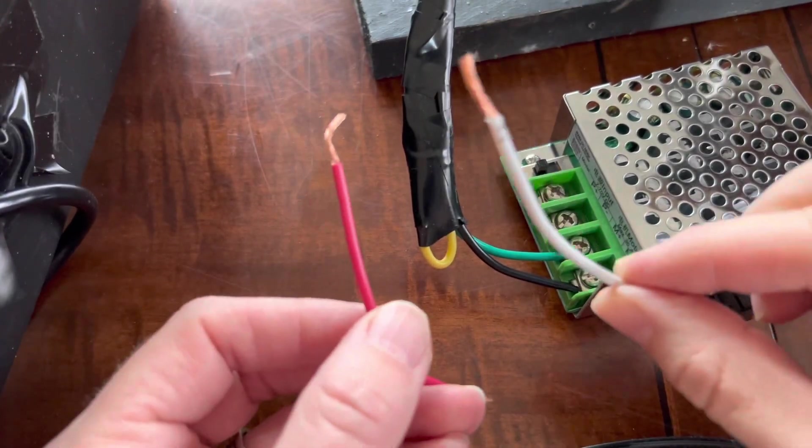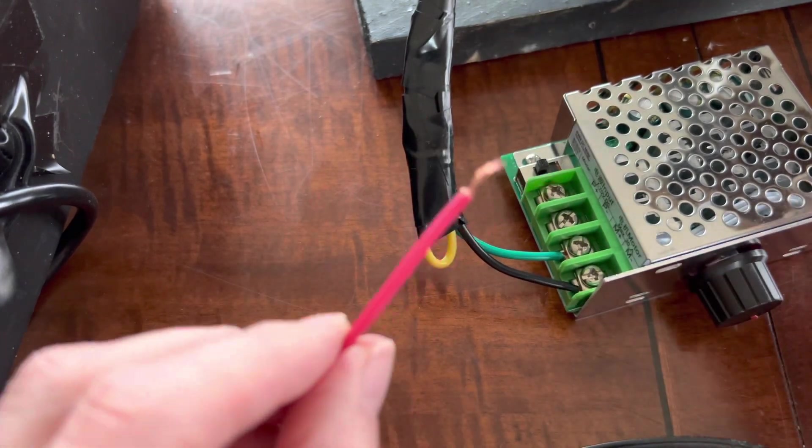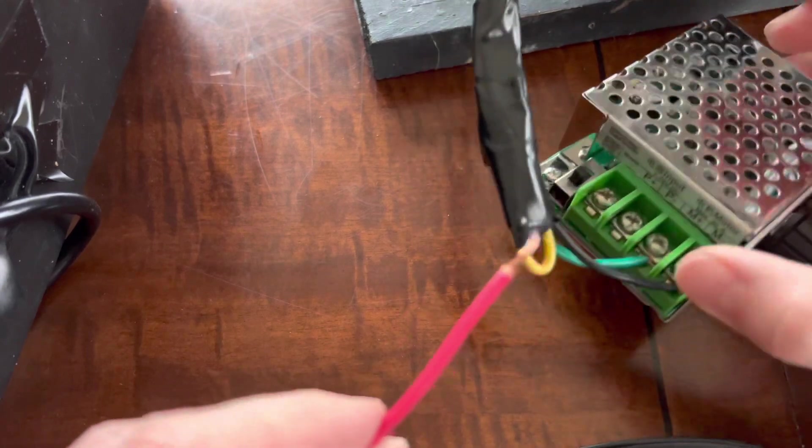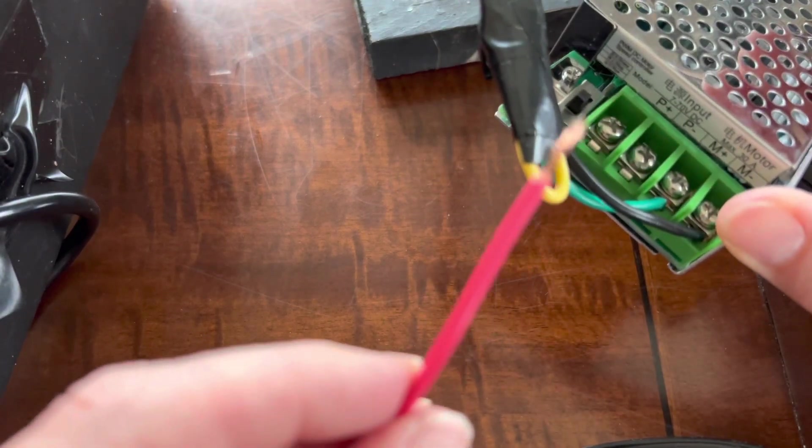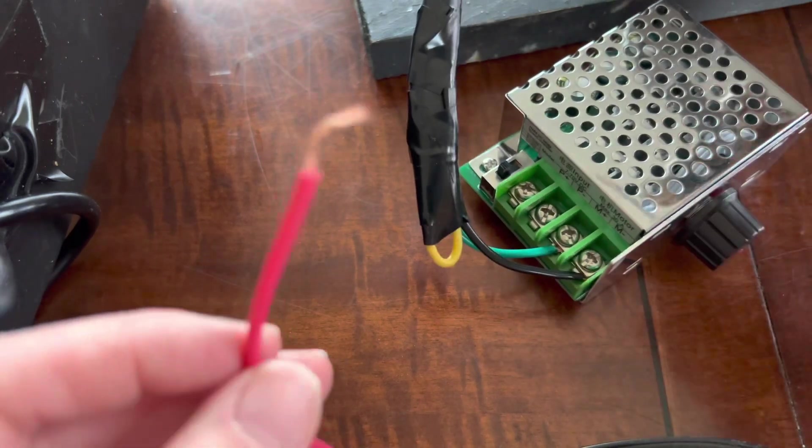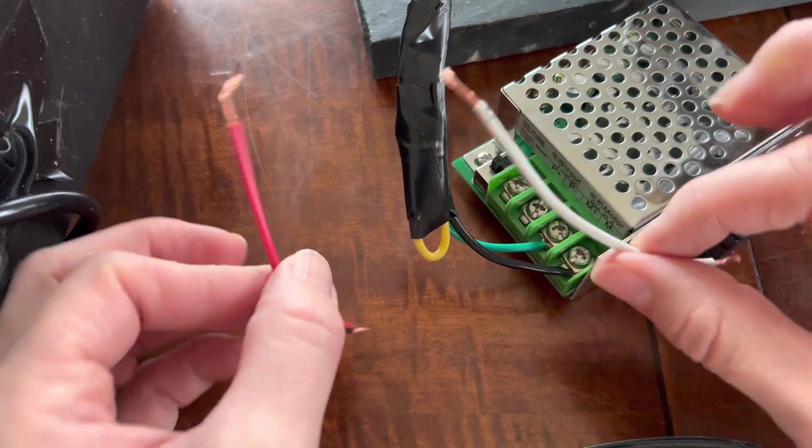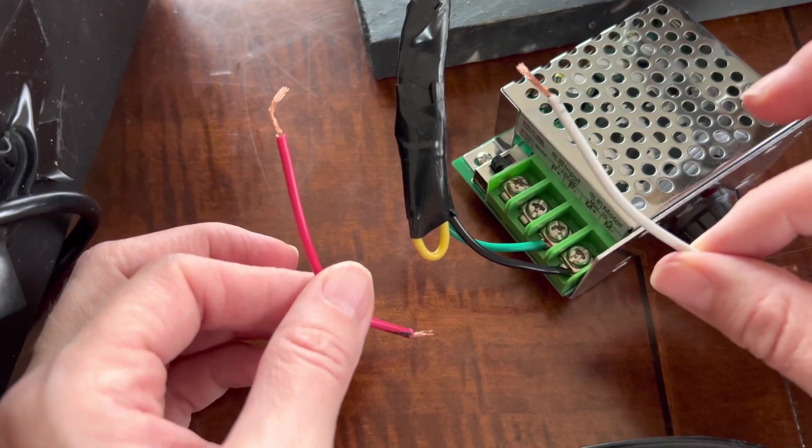Now we're going to take our two little pieces that we cut off of the excess wiper motor wiring and we're going to connect to the P positive and P negative. And since our colors don't really matter at this part because we just took extra off, you can do either one for positive and negative.